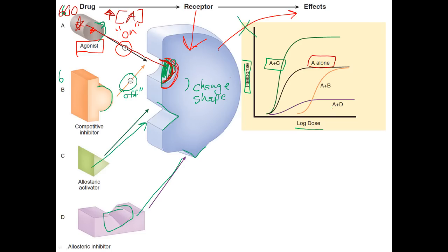In an A and D scenario — agonist plus allosteric inhibitor — the allosteric inhibitor binds to a different site, causing a conformational change in the molecule so the agonist can't bind to the receptor as much, and you get a lower response. In some cases it completely blocks it off and you get a flat line. Thank you.